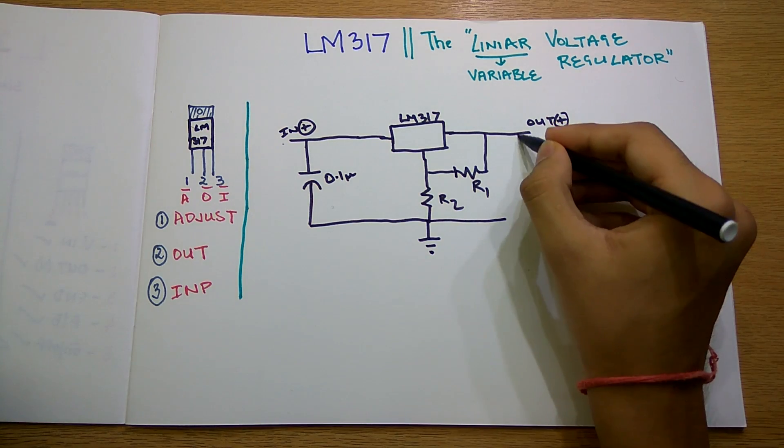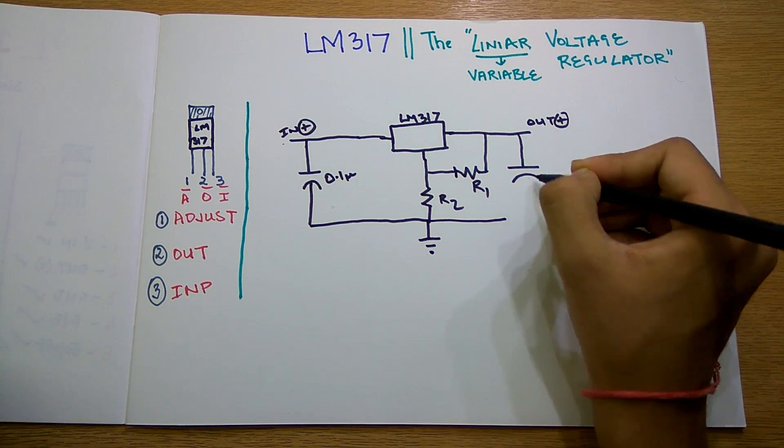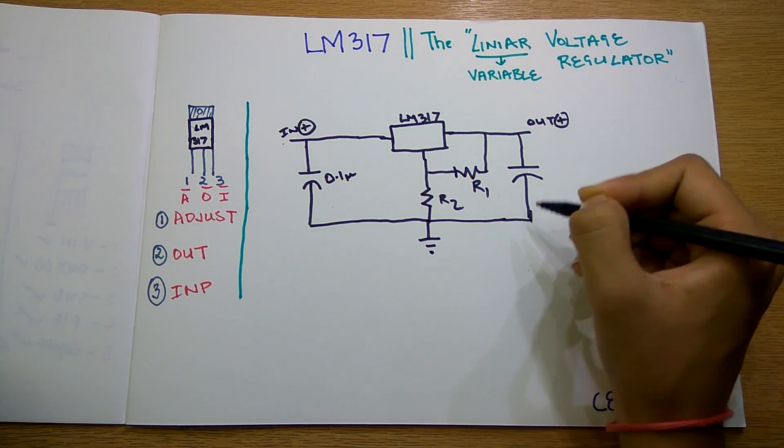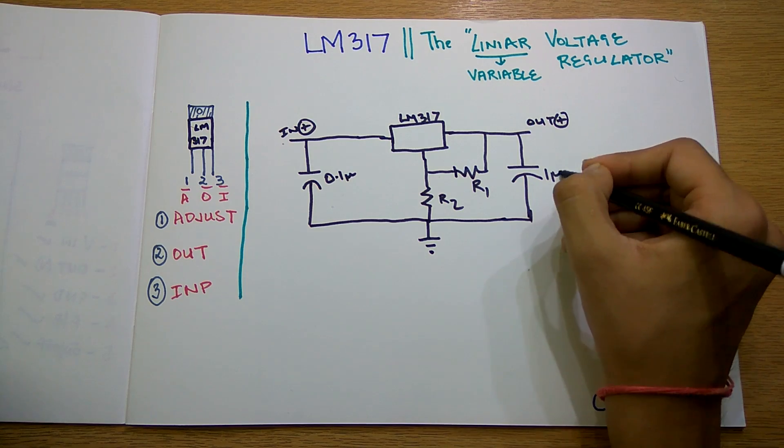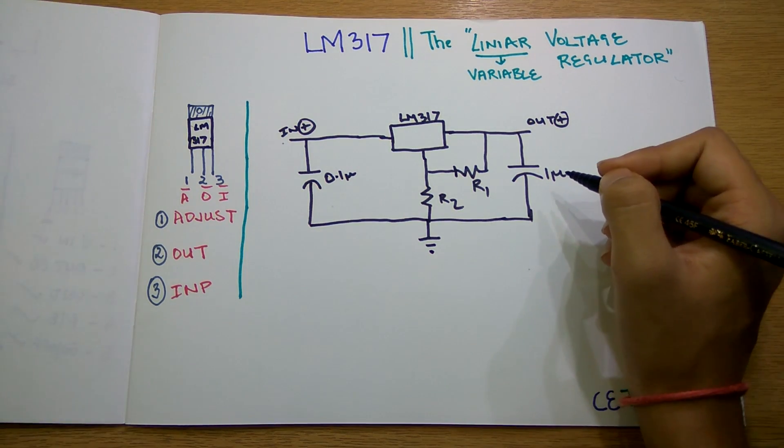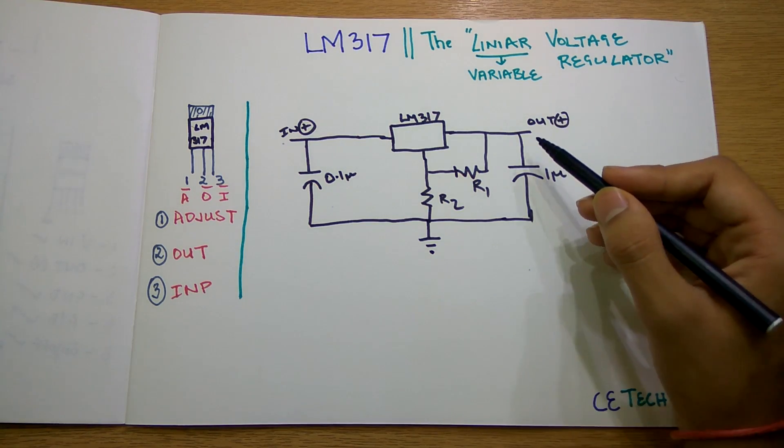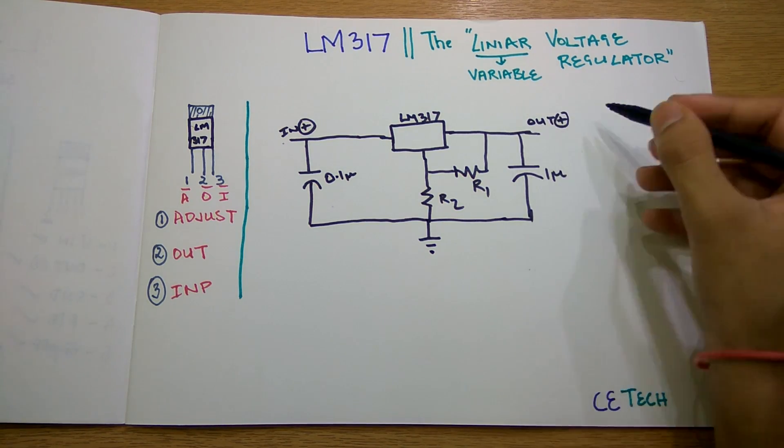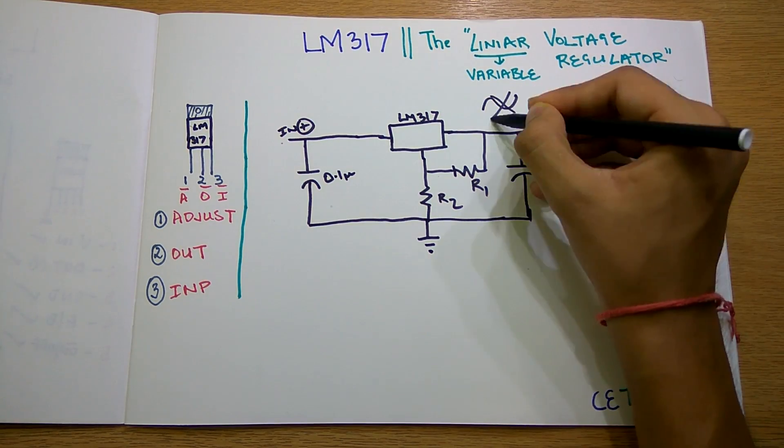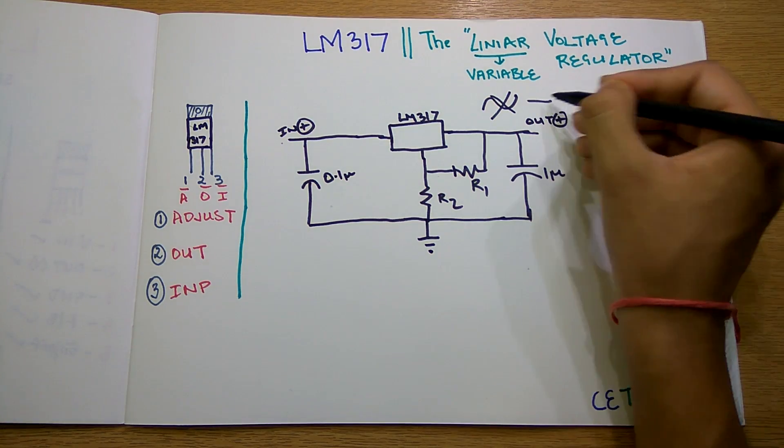Here also we will have a capacitor which must be minimum 1 microfarad. Basically these two capacitors will determine that your output is steady and not in a wavy form. It will be DC output.